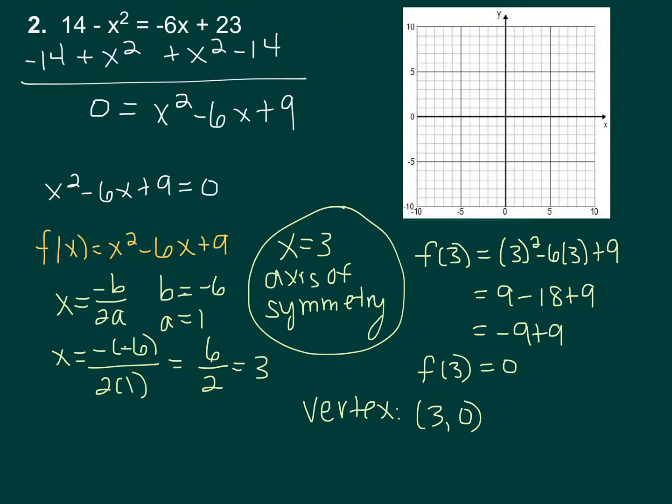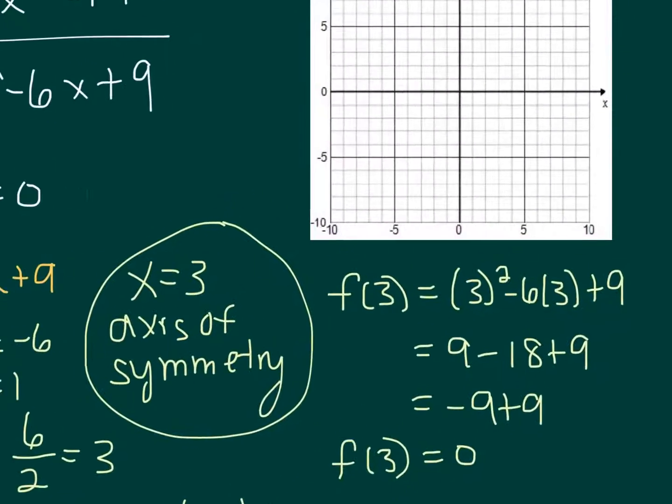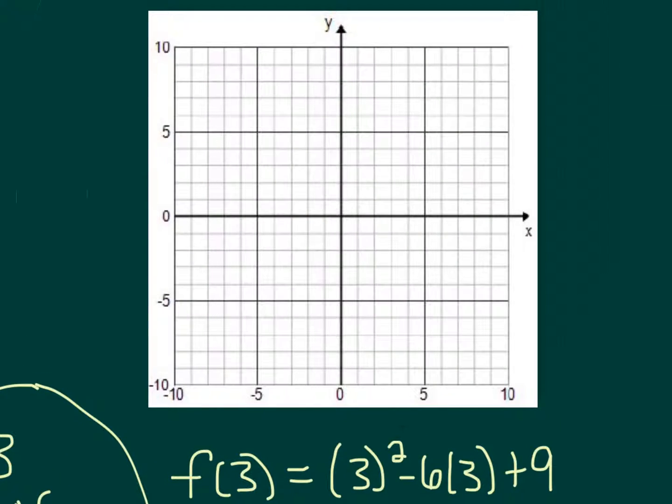So let's go ahead and graph the axis of symmetry and our vertex here. The axis of symmetry is at x equals 3, and then our vertex is at 3, 0. So right here.